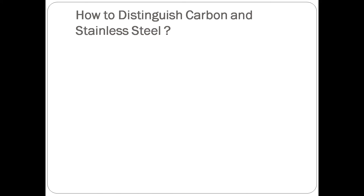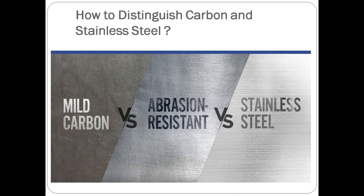Now, how do you visually distinguish between carbon steel and stainless steel? Looking at this picture, we have carbon steel, stainless steel, and an abrasion-resistant steel. Stainless steel is very lustrous — and this luster depends on the grade, which is determined by chromium content. Increasing chromium content can produce a finish as reflective as a mirror. Carbon steel, on the other hand, is dull and has a matte finish.